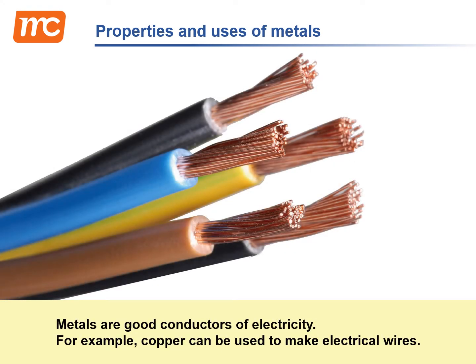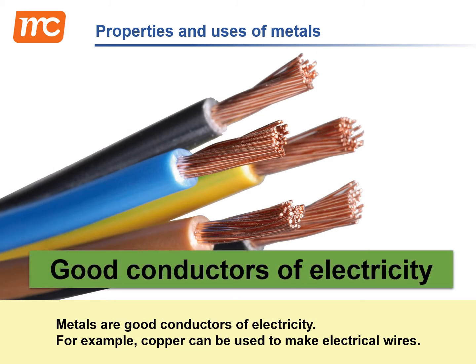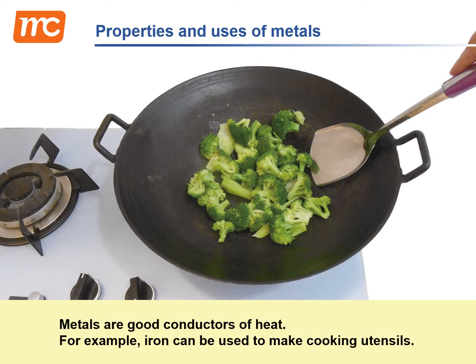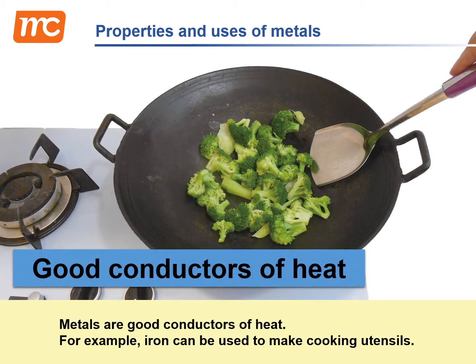Metals are good conductors of electricity. For example, copper can be used to make electrical wires. Metals are also good conductors of heat. For example, iron can be used to make cooking utensils.